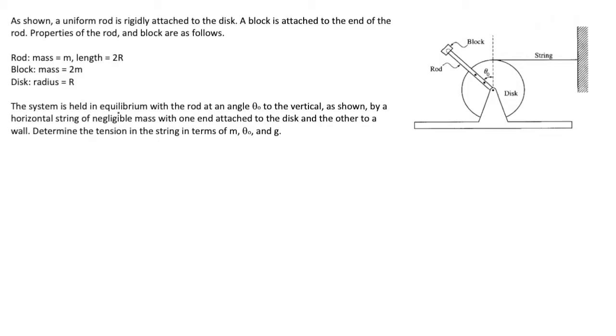The system is held in equilibrium with the rod at an angle theta naught to the vertical, as shown by a horizontal string of negligible mass with one end attached to the disc and the other to the wall. Determine the tension in the string in terms of m, theta naught, and g.